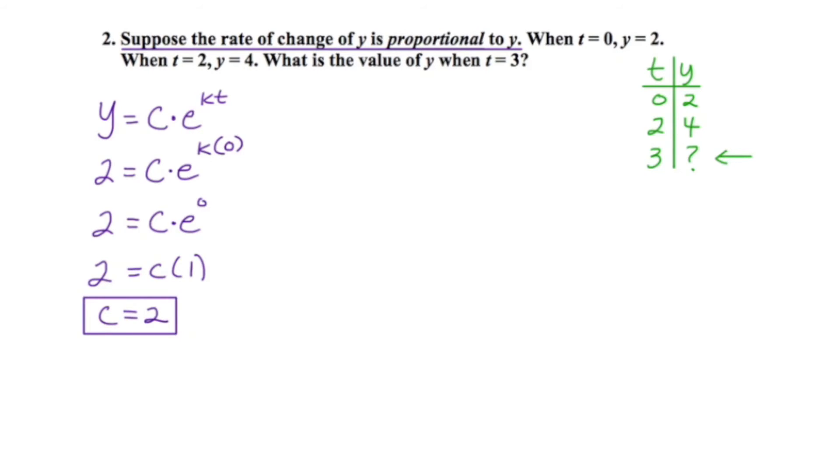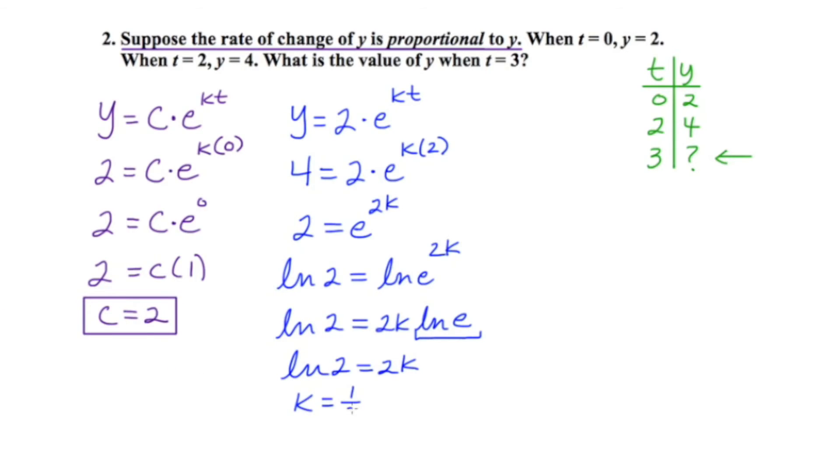Now I'm going to substitute this two into the growth decay model. And I'm going to go to my second data point, this time allowing y to be four and t to be two. Now my objective is going to be to isolate k. The first step that I'm going to do is divide both sides by two. My next move will be to take the natural log of both sides. Focusing on the right hand side, I'm going to use the power rule for logs, bringing the 2k down in front. Now we all know that the natural log of e is just one, so that really doesn't play any role. And finally, I can isolate k by multiplying both sides by one half.